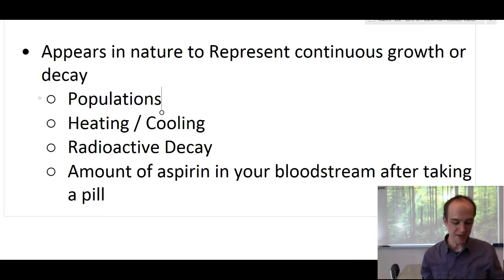Here's a list of some things that E is used for. It shows up a lot in nature, which is why we call these logarithms the natural logarithms. Populations that grow continuously are modeled with E. Things that heat up or cool down are frequently modeled with E. Radiation and anything that is decaying radioactively frequently is modeled with E. And if you have ever had a headache and you've taken an aspirin and you have that aspirin in your bloodstream and it's losing amount of aspirin in your bloodstream, that too is modeled with E. Everything that has a continuous process is modeled with E.